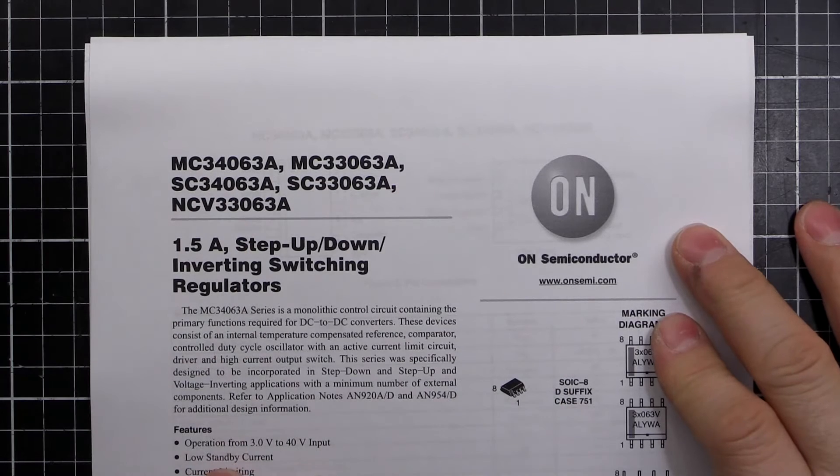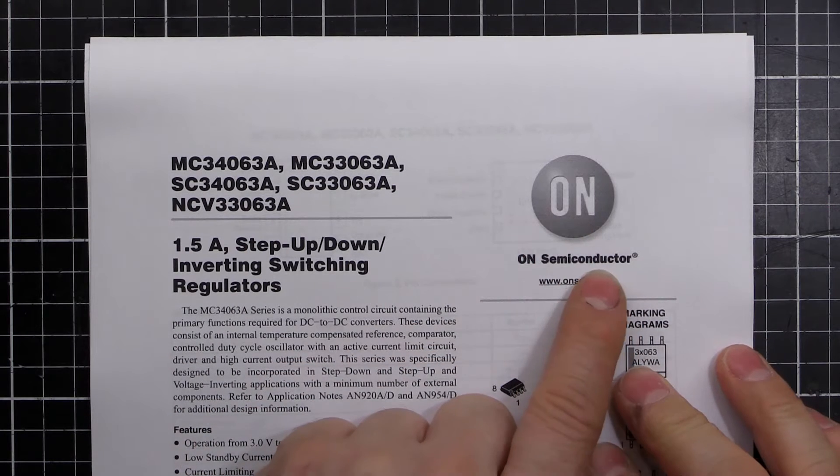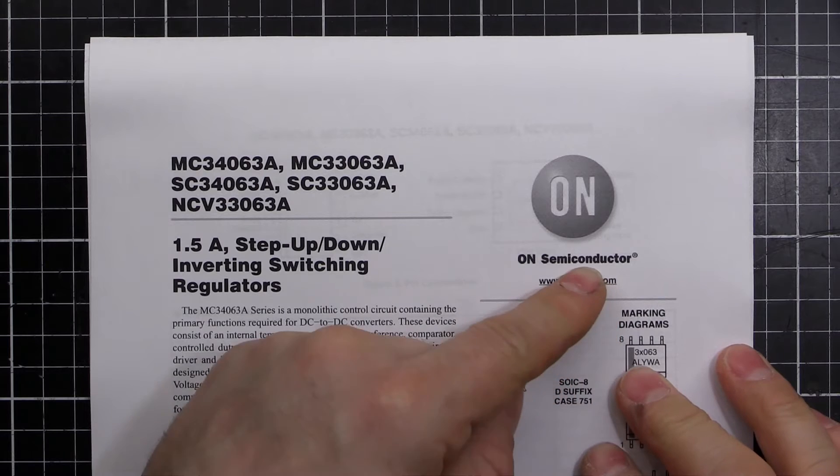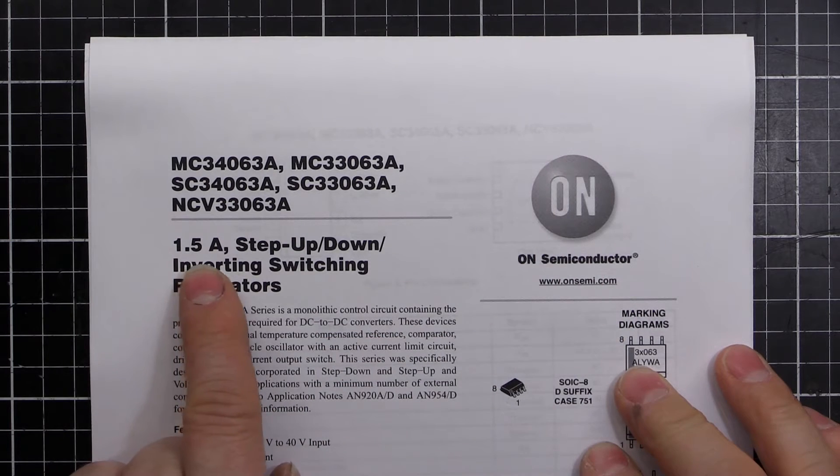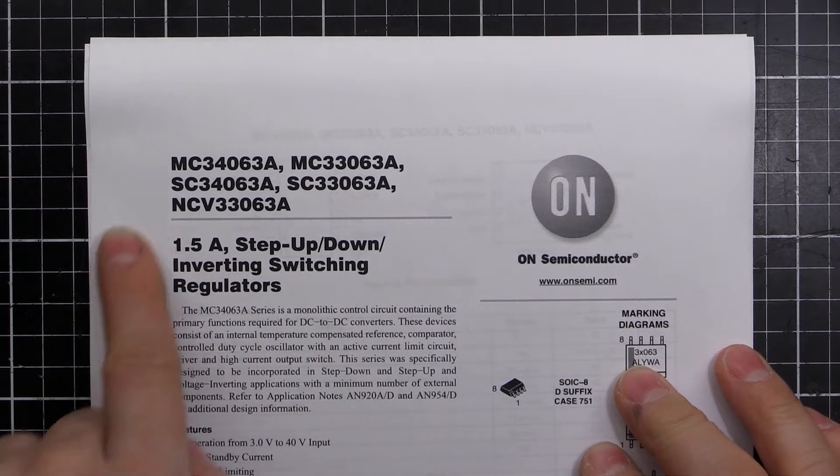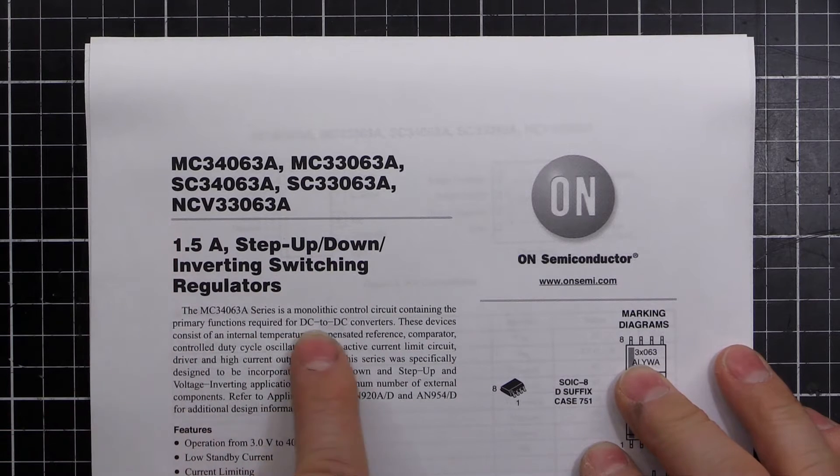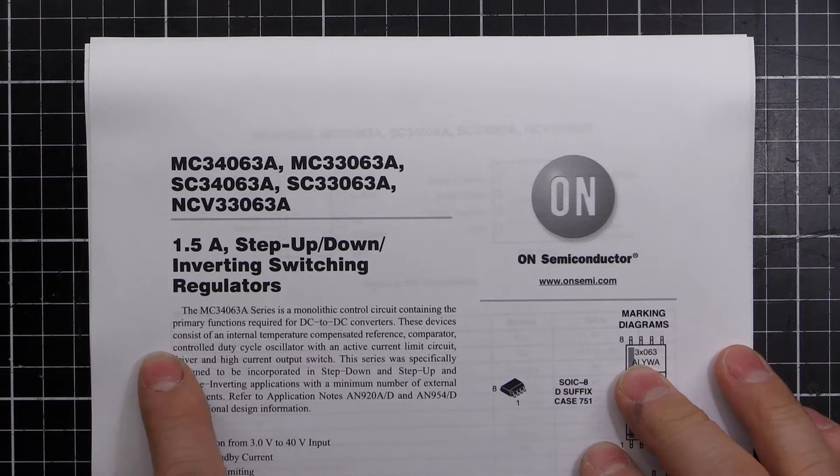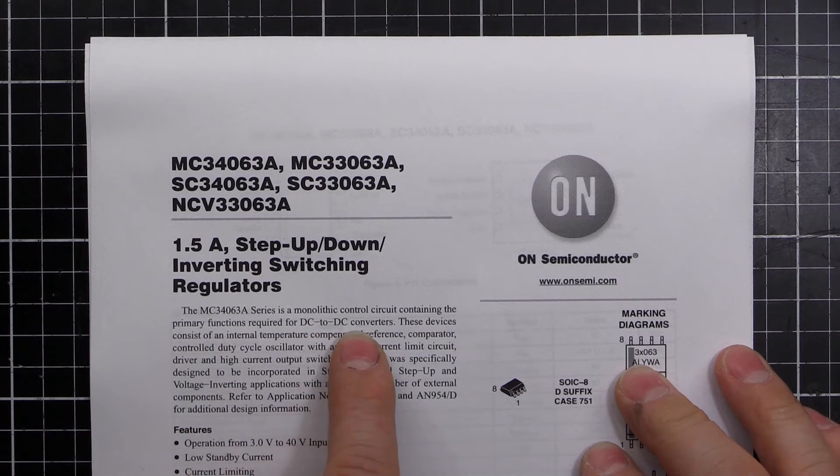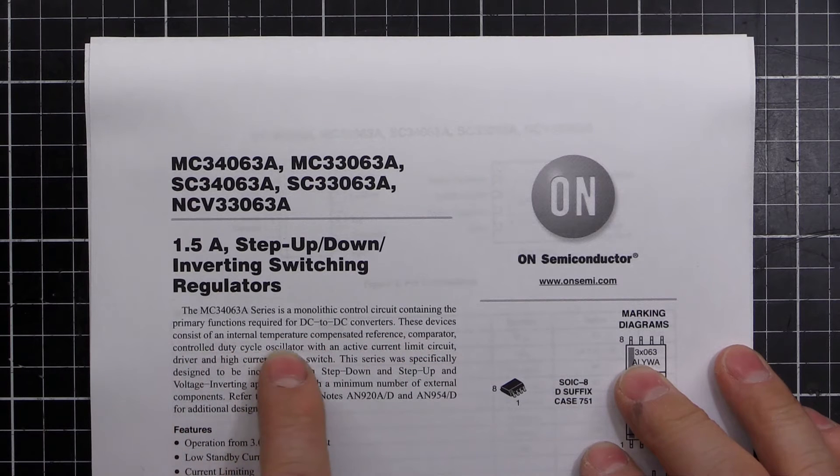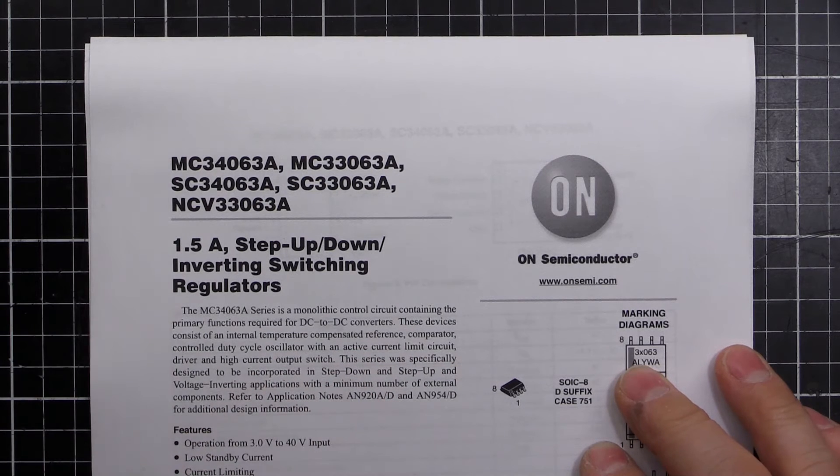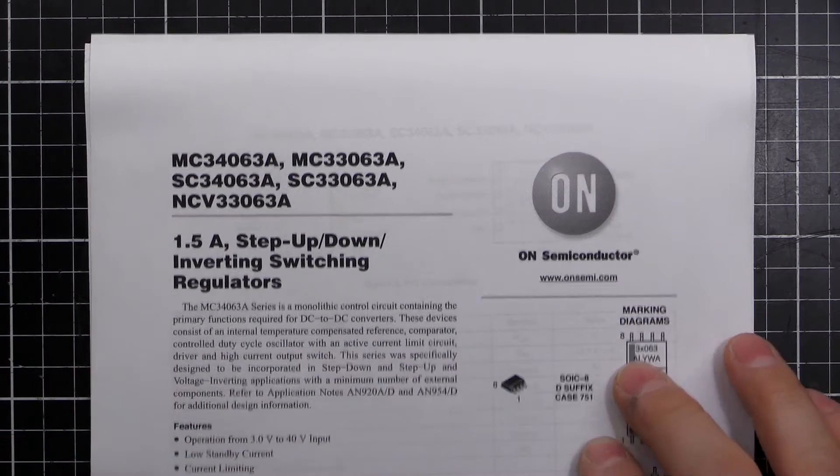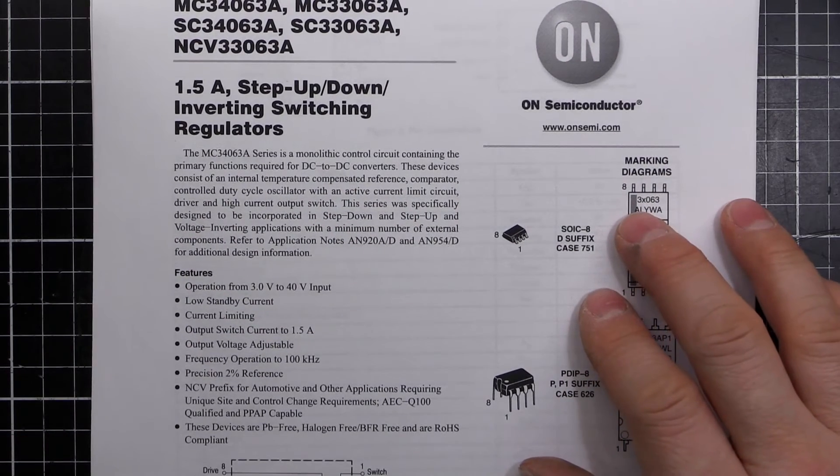Okay, so I found the data sheet here. It's an On Semi and the one we've got, maybe the genuine item, maybe a copy, who knows. But it's a 1.5 amp step up, step down, inverting switching regulator. So it says here's a monolithic control circuit containing the primary functions required for DC to DC converters, internally temperature compensated comparator control duty cycle. Basically it's a buck boost converter.